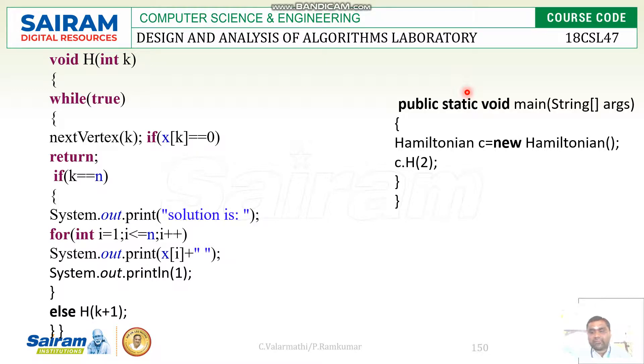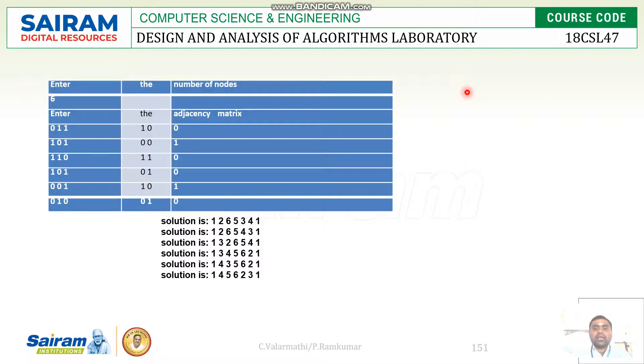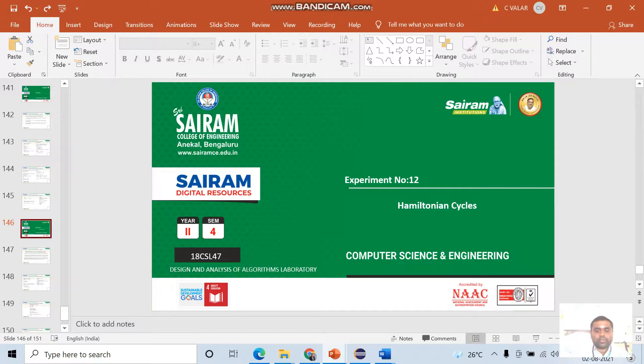This is an output. Now, what are the possible ways to reach the source after visiting all other places will be displayed here. This is all about the program. Now I will execute the program.